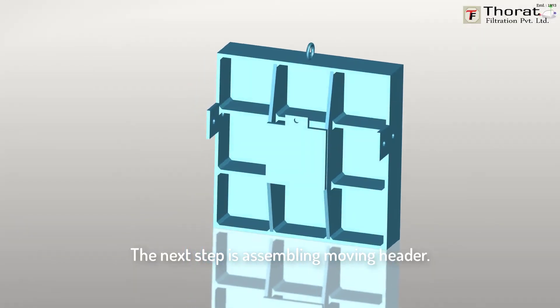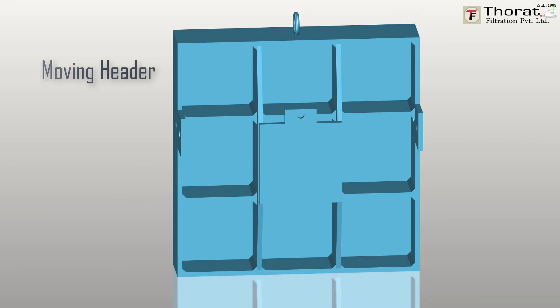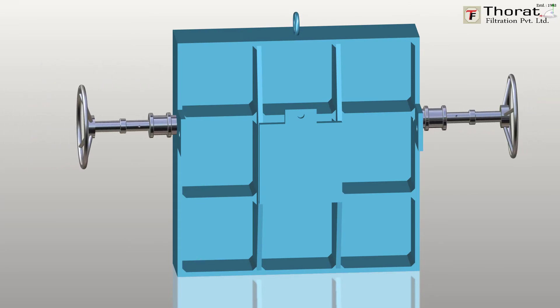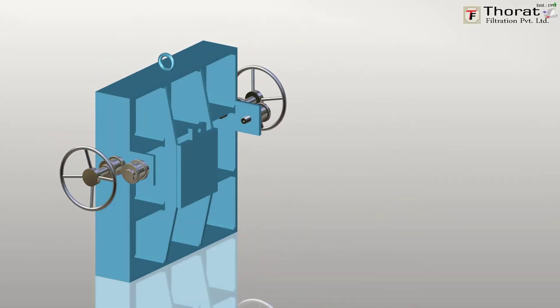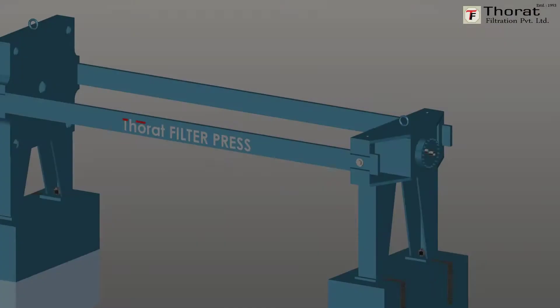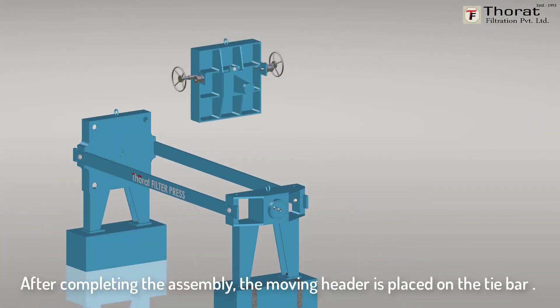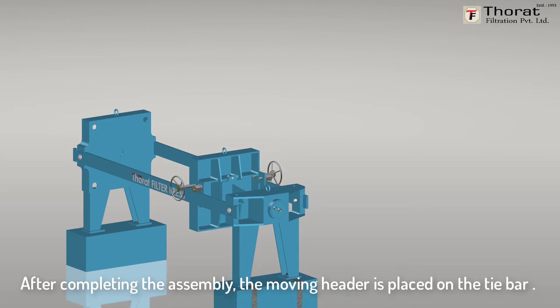The next step is assembling moving header. It consists of two handles, four rollers, and two roller pins. After completing the assembly, the moving header is placed on the tie bar.